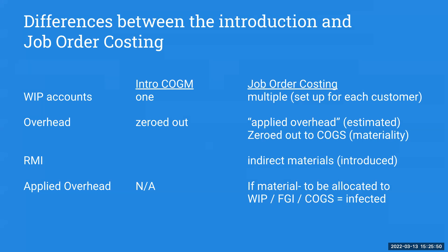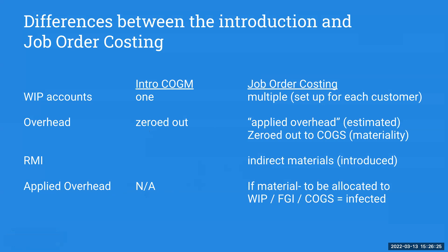We'll also have to zero out that factory overhead, and in general we're going to zero it out if it's immaterial to cost of goods sold. For raw materials inventory, in our earlier video we did not talk about the concept of indirect materials. Indirect materials are materials that I cannot apply directly to one particular job — rather, it's for all the jobs that I'm working on. And lastly, for applied overhead, if it does happen to be material, we're not going to just take it to cost of goods sold, but rather distribute it amongst work in process, finished goods inventory, and cost of goods sold — what I like to call the infected accounts.